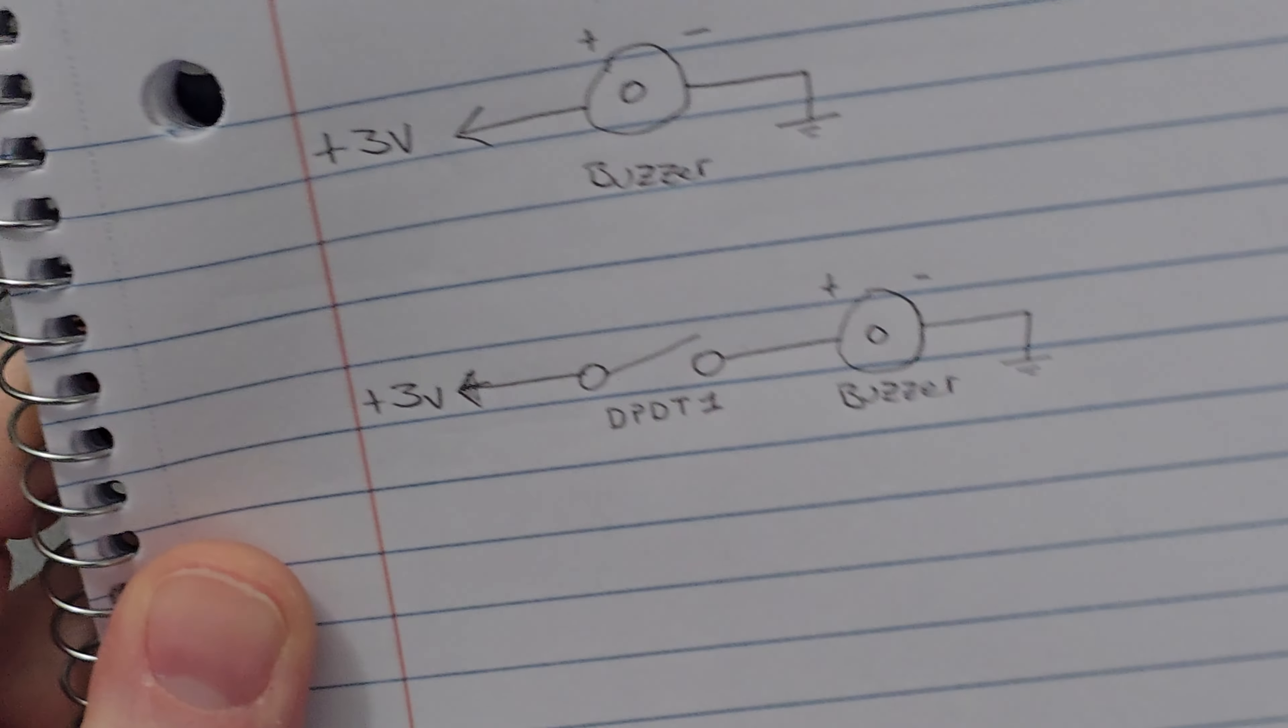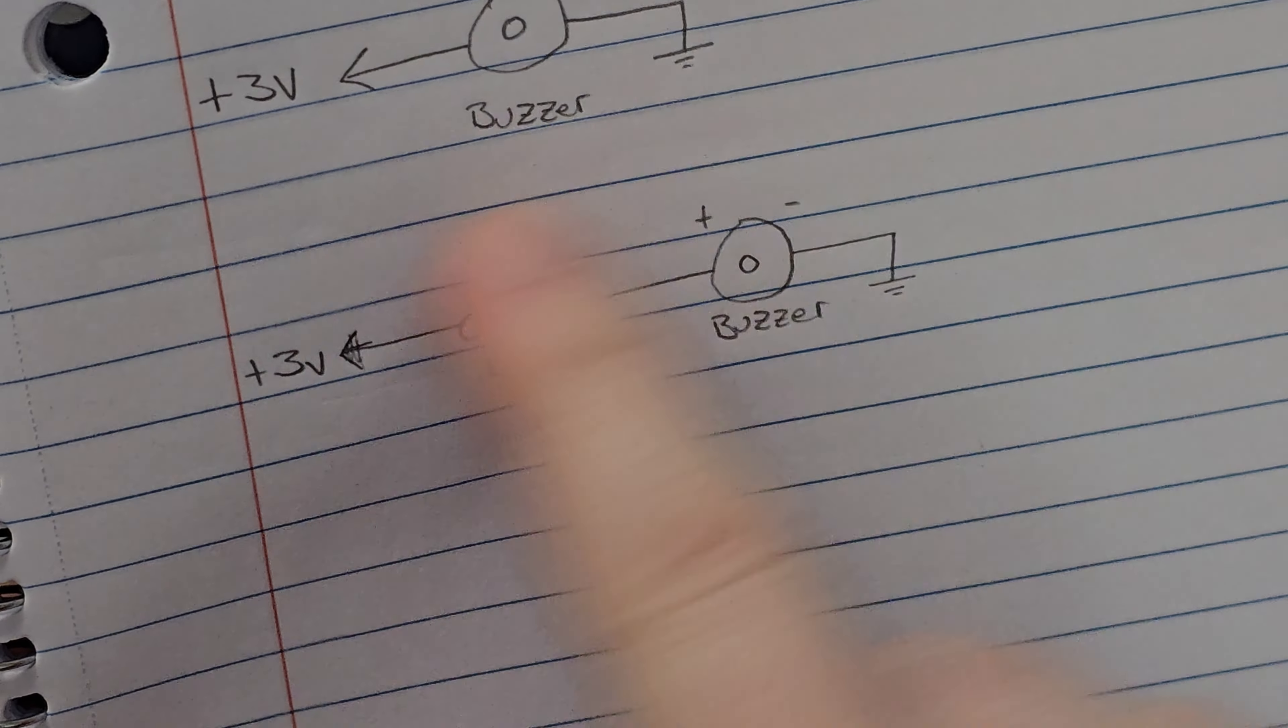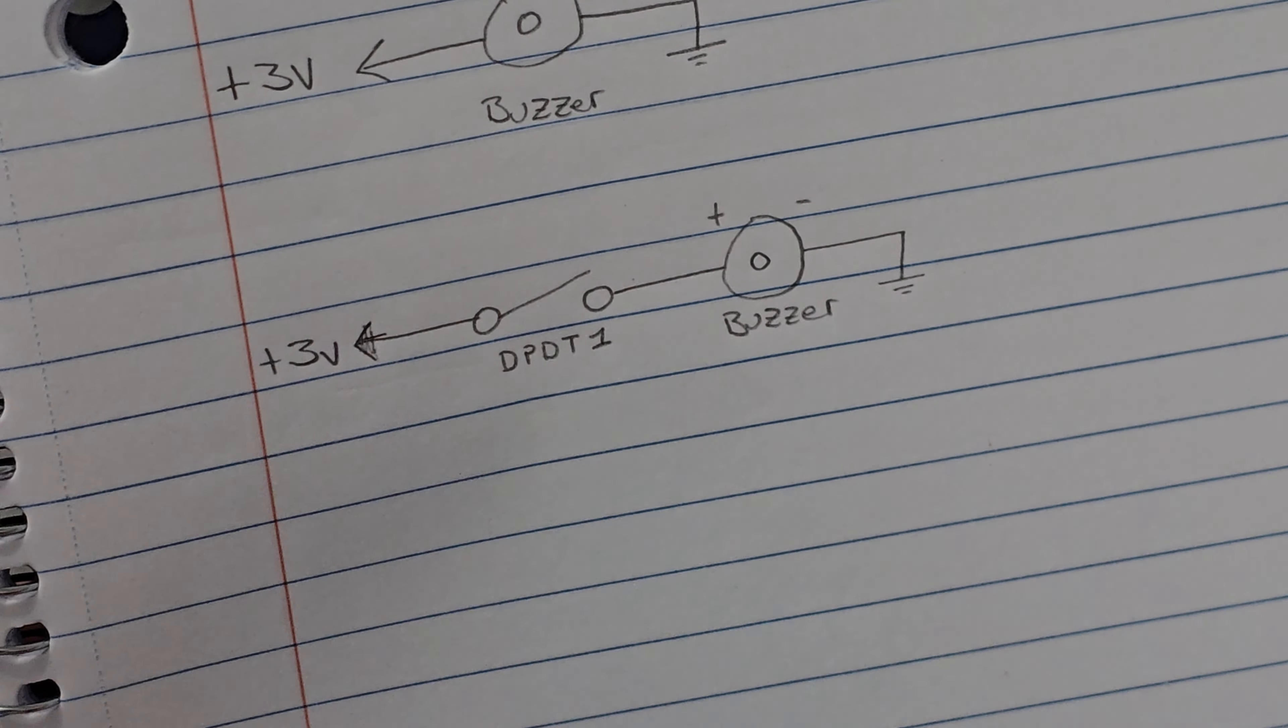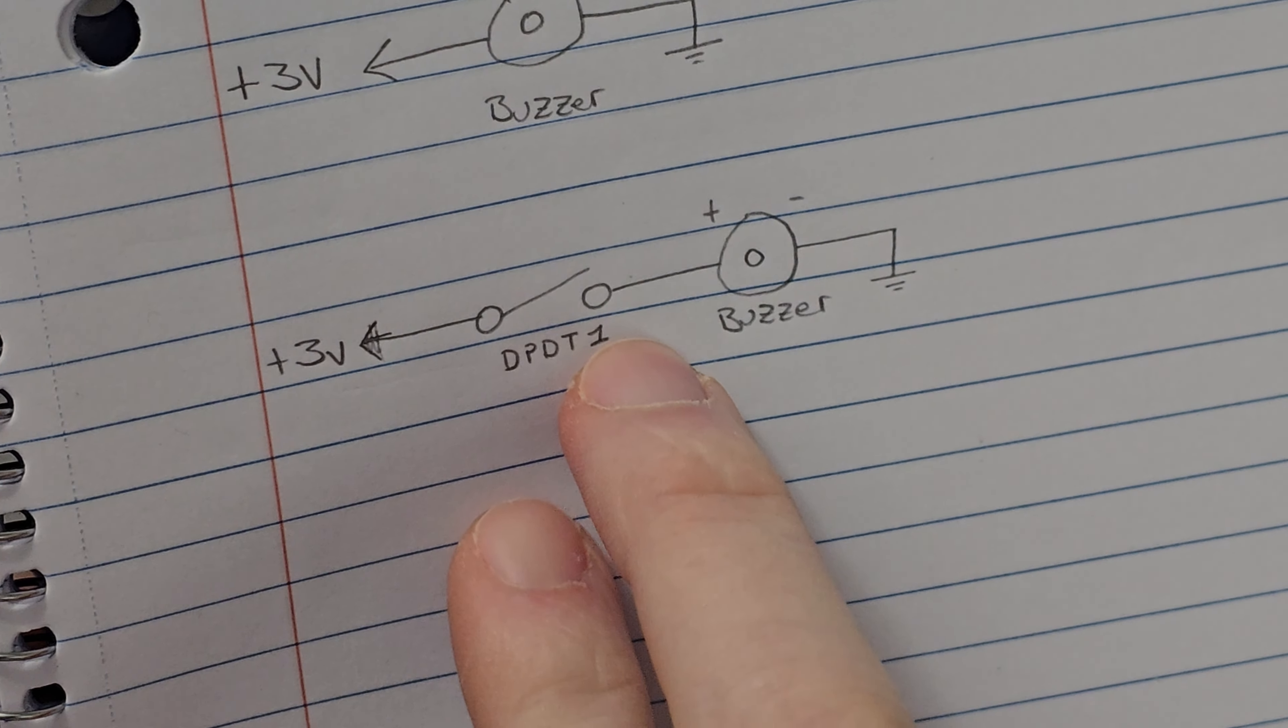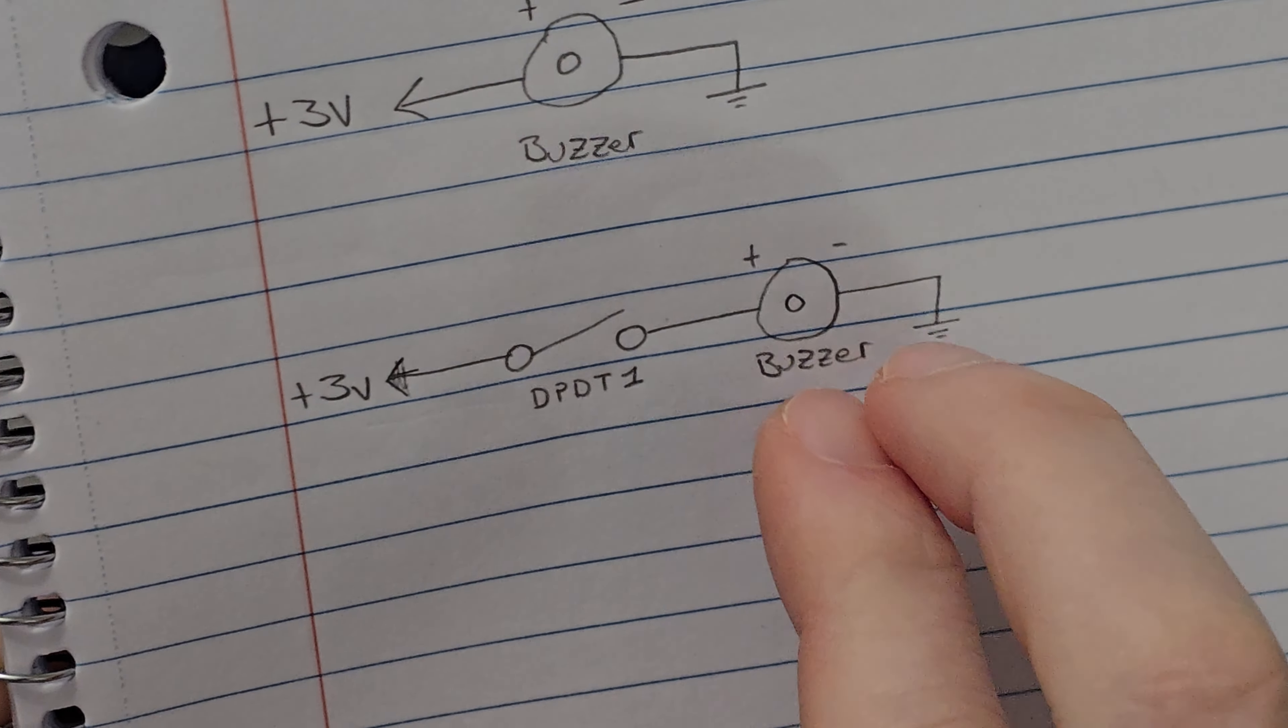All right everybody, in today's video we are going to be using a double pull double throw switch to actuate the buzzer. So we're kind of expanding on the previous video.